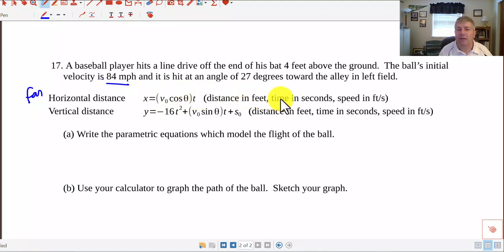So again, we'll give you your equations for the horizontal distance, or how far the ball goes. So will it reach the fence or not? So x equals v sub zero, where that's our initial velocity, cosine of theta, our launch angle is theta, and t is time. So we have distance in feet, time in seconds, and speed in feet per second. Our vertical distance, or our height, is our y. y equals negative 16t squared plus v sub zero sine of theta t plus s sub zero.